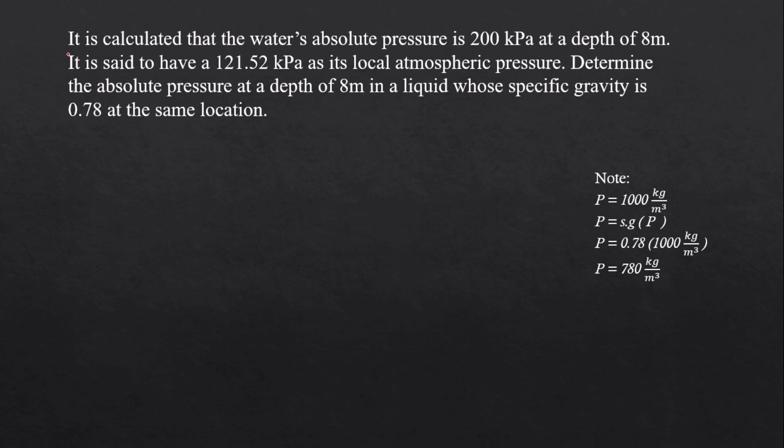It is calculated that the water's absolute pressure is 200 kilopascal at a depth of 8 meters. It is said to have 121.52 kilopascal as its local atmospheric pressure. Determine the absolute pressure at a depth of 8 meters in a liquid whose specific gravity is 0.78 at the same location.